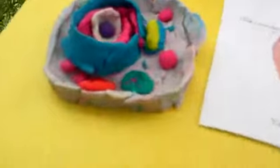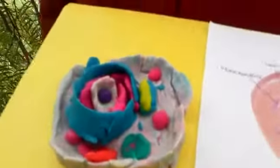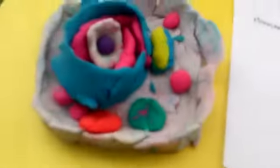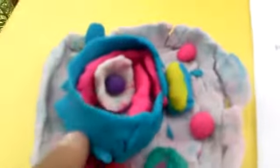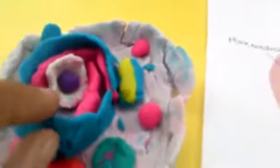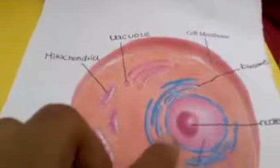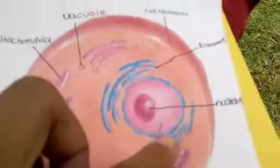All eukaryotic cells have an endoplasmic reticulum. Its membrane typically consumes more than half of the total membrane of an average animal cell.